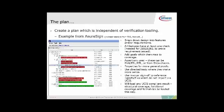The first thing is to create a plan which is ideally independent of the verification tooling. Here I have an example from SureSign — and as I mentioned, no backhanders from TVS, honest — there are other planning tools available, each with their own advantages, foibles, and disadvantages. But we've been developing a flow using this.